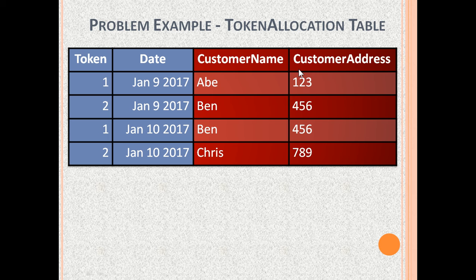This gives rise to issues. For example, Ben's customer address is duplicated because Ben visited on both January 9th and January 10th, 2017.